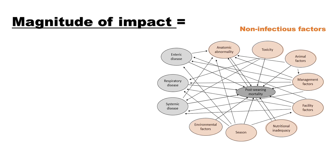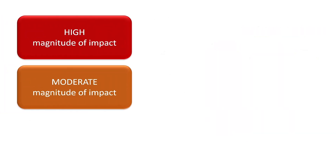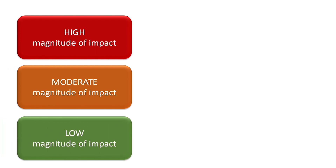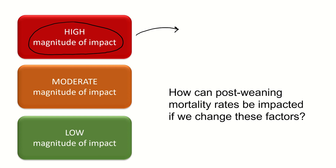An important component of this process was to assess how important certain factors are compared to others in their contributions to post-weaning mortality. This was a large challenge, and the information in the literature was very diverse, which made strong numeric measures very difficult. However, we wanted to categorize these factors based on their magnitude of impact — measured by how common each factor is, as well as how severe mortality related to each factor is. Three categories were created: factors with a high, moderate, or low relative magnitude of impact. In general, changes made regarding factors with a high magnitude of impact can have the greatest effect on changing post-weaning mortality.